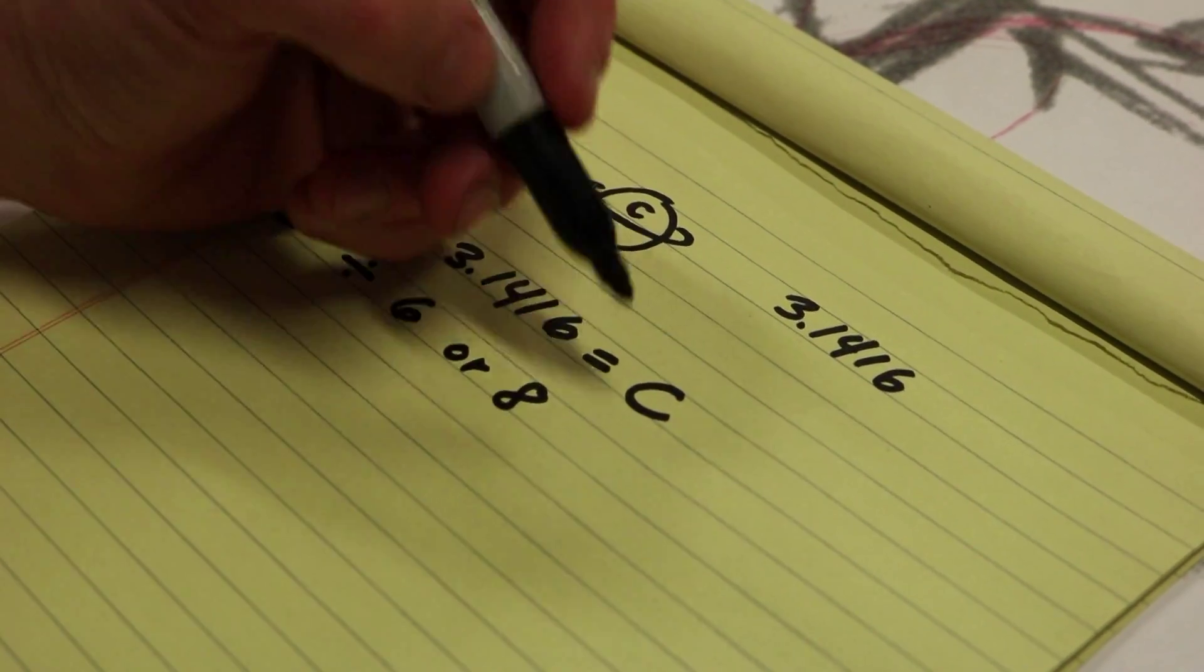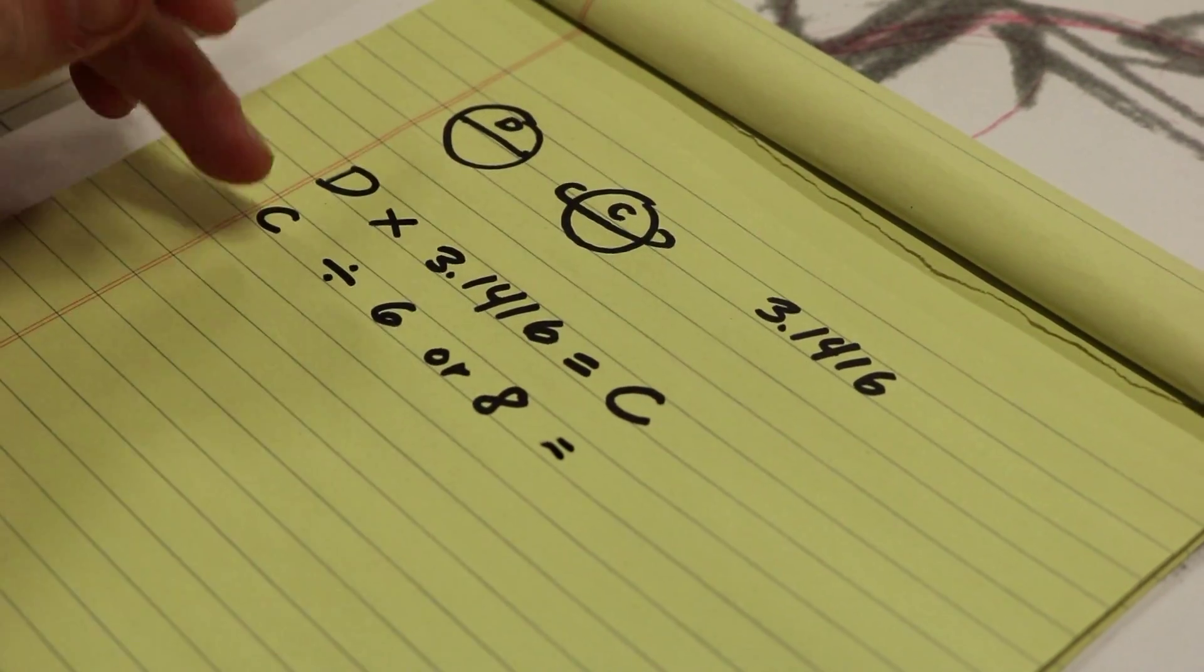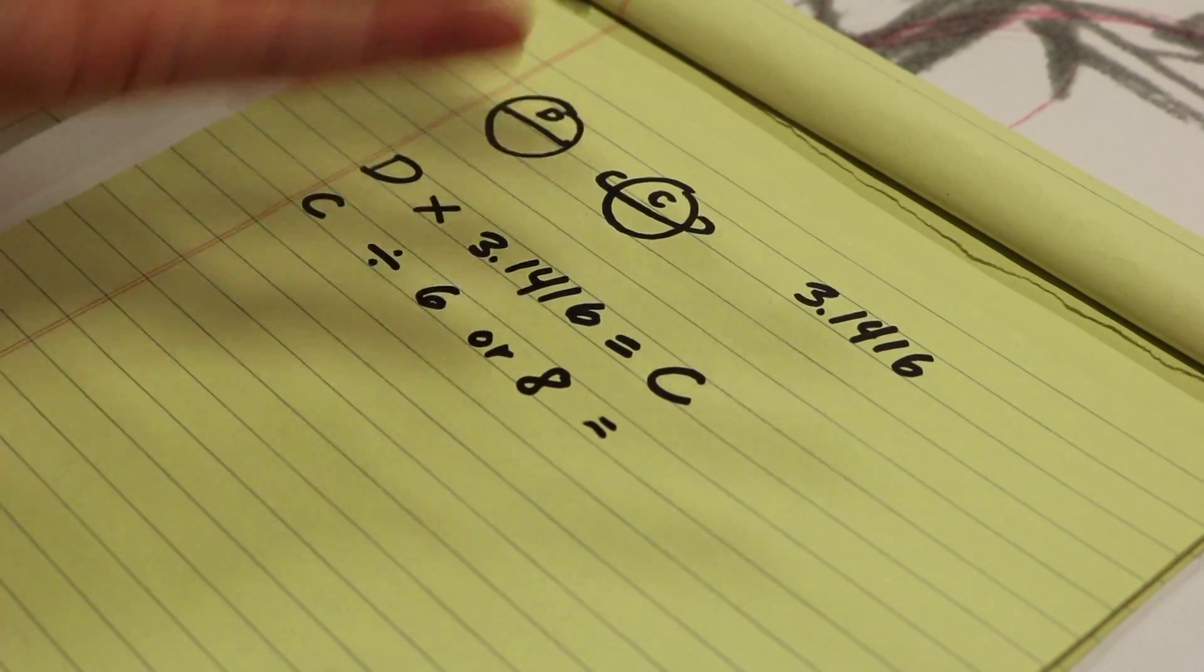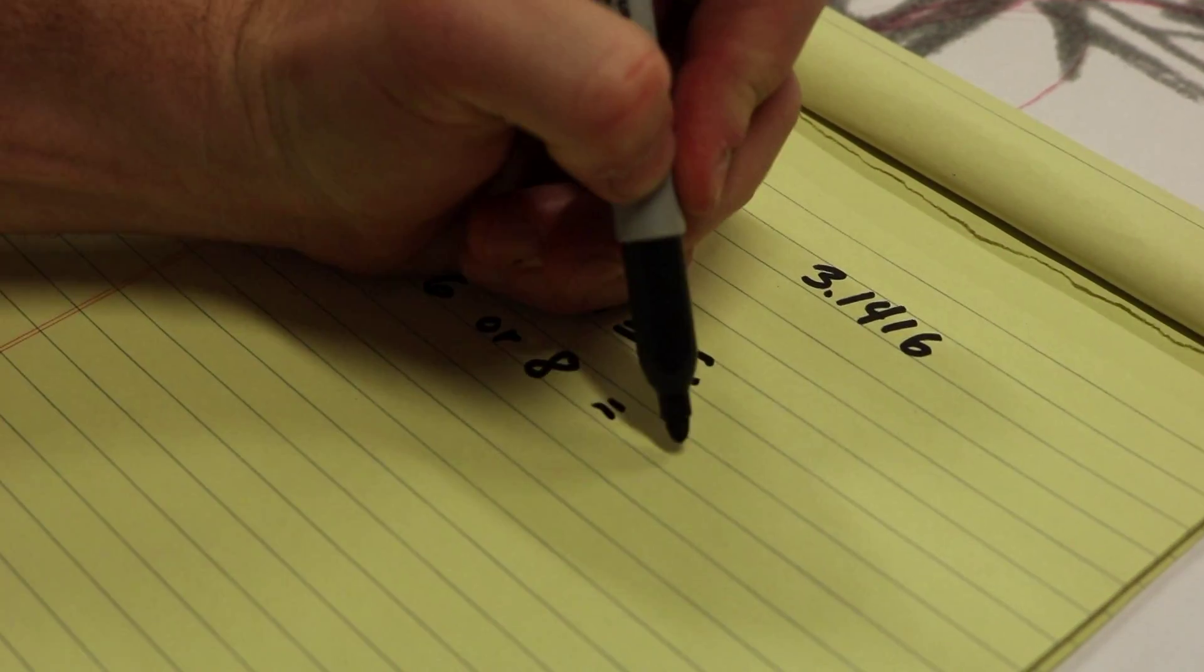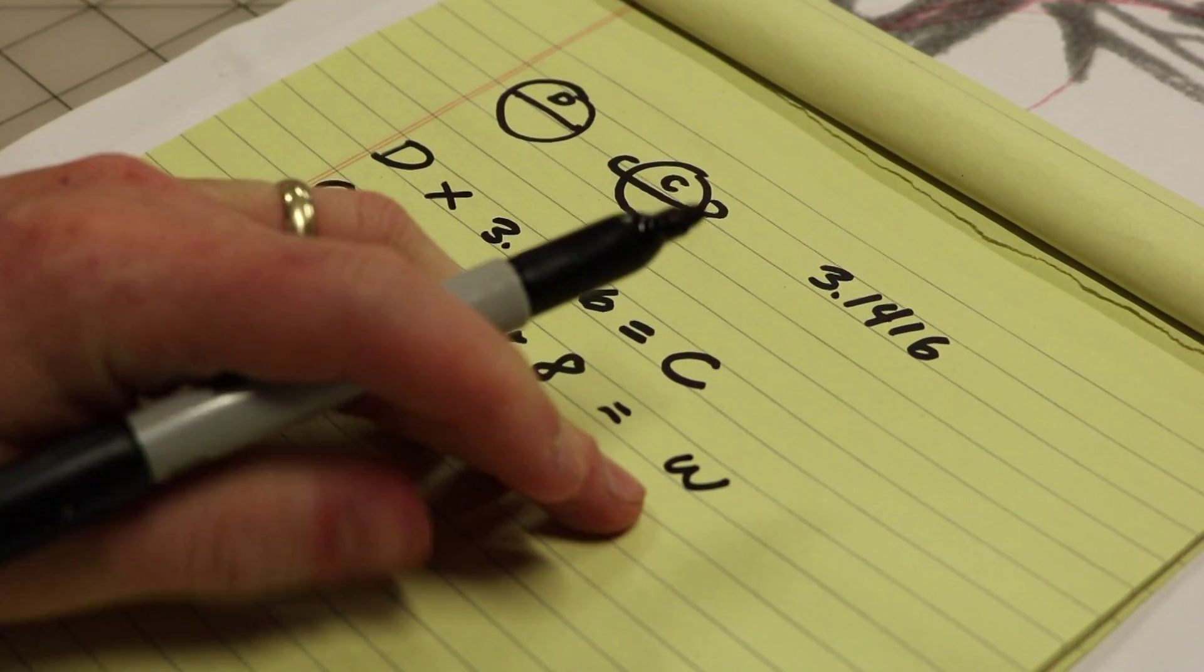And once you have that, that is going to give you the circumference divided by, let's say we divide it by 8. That's going to give you the width of each leaf.